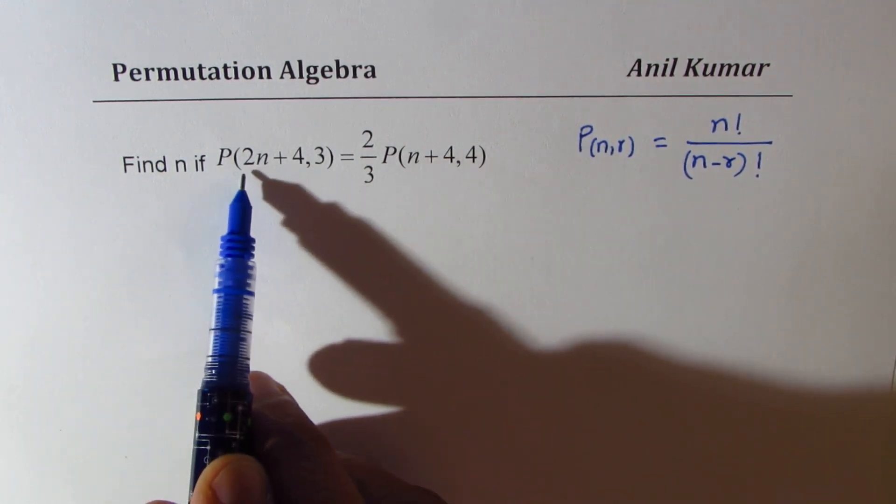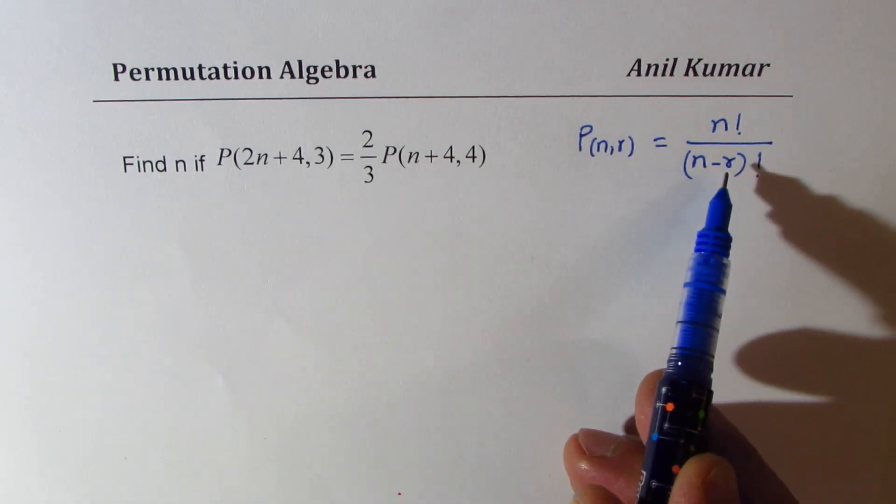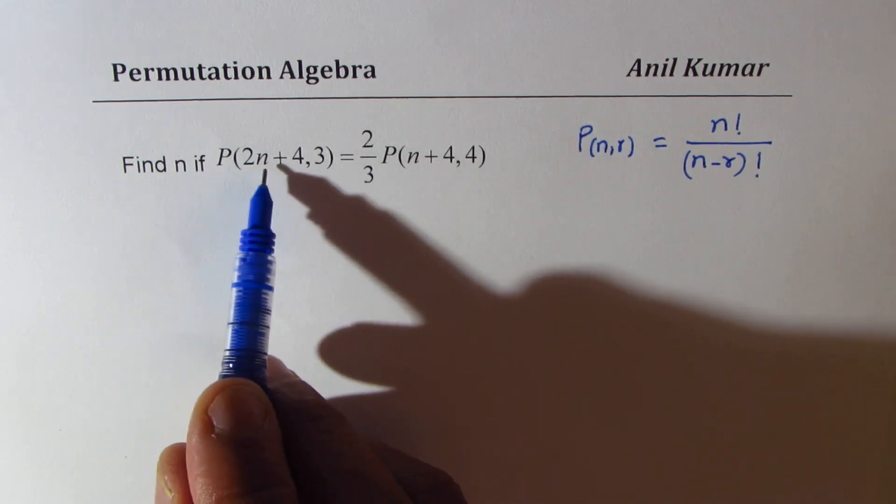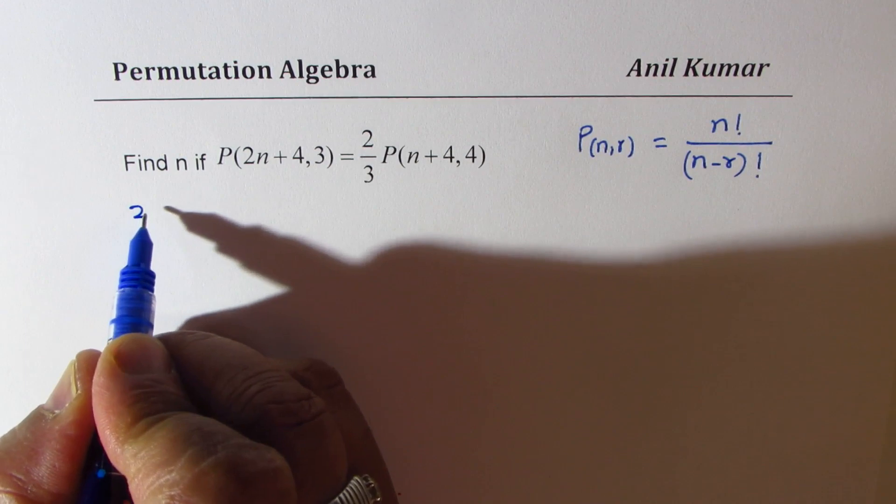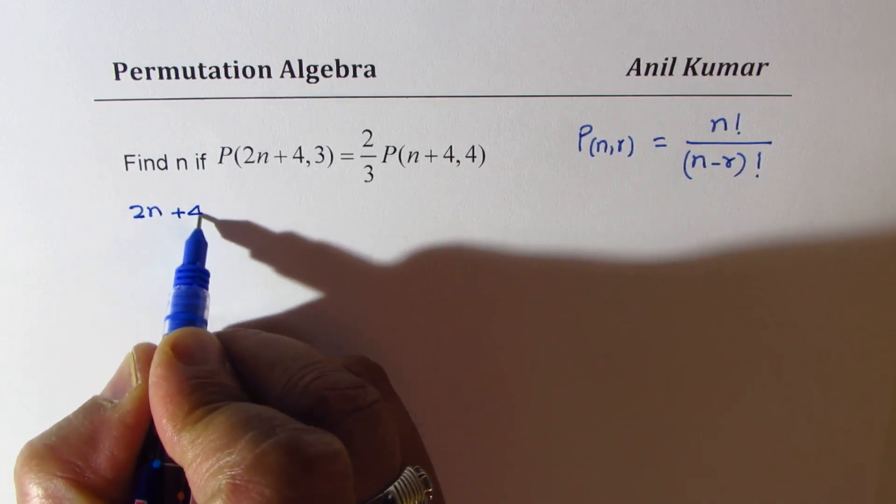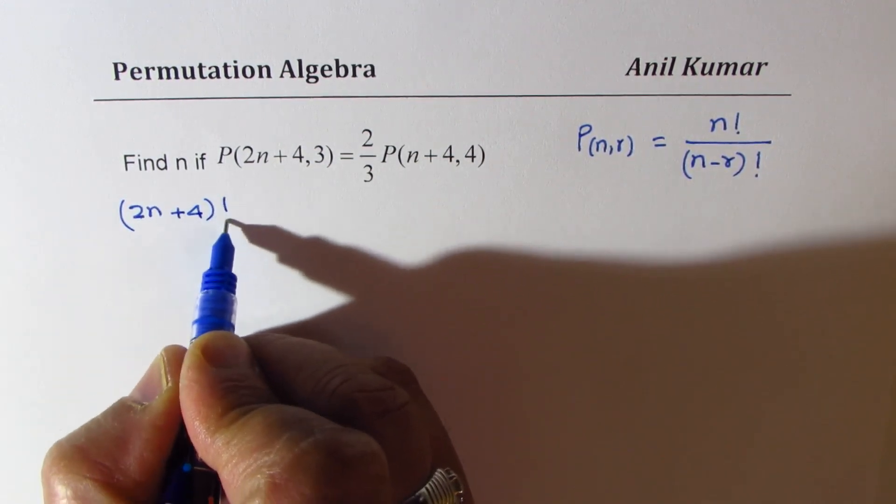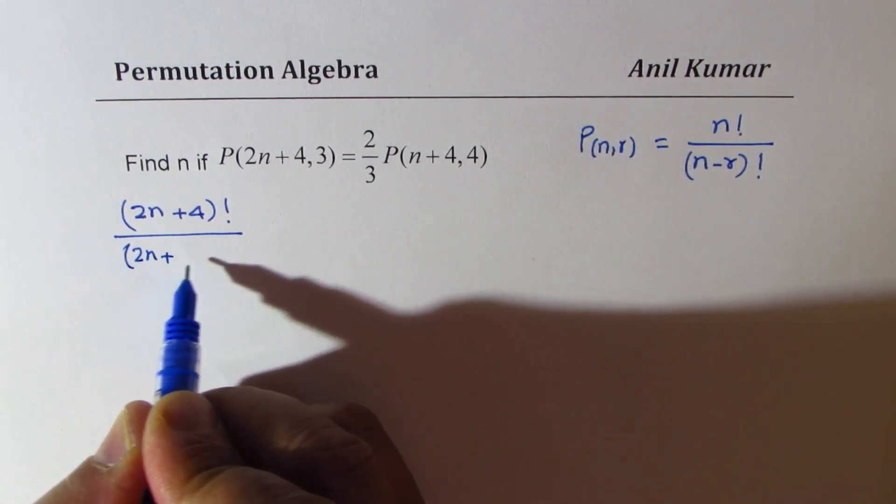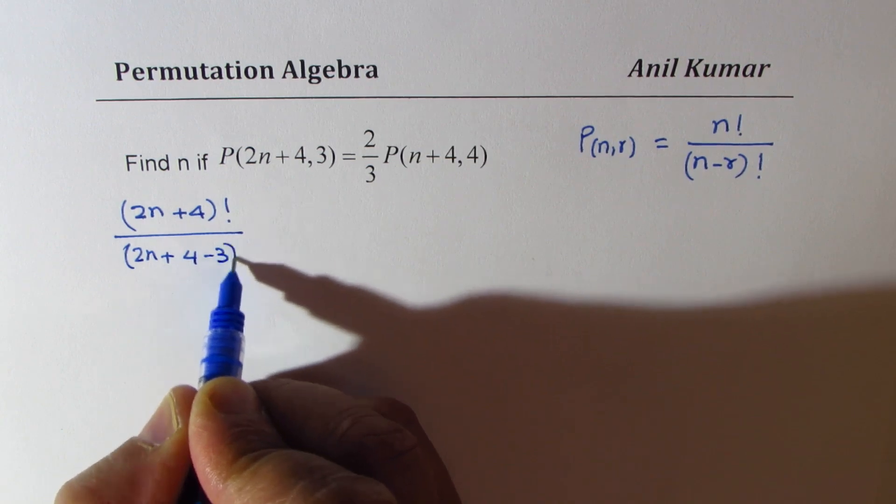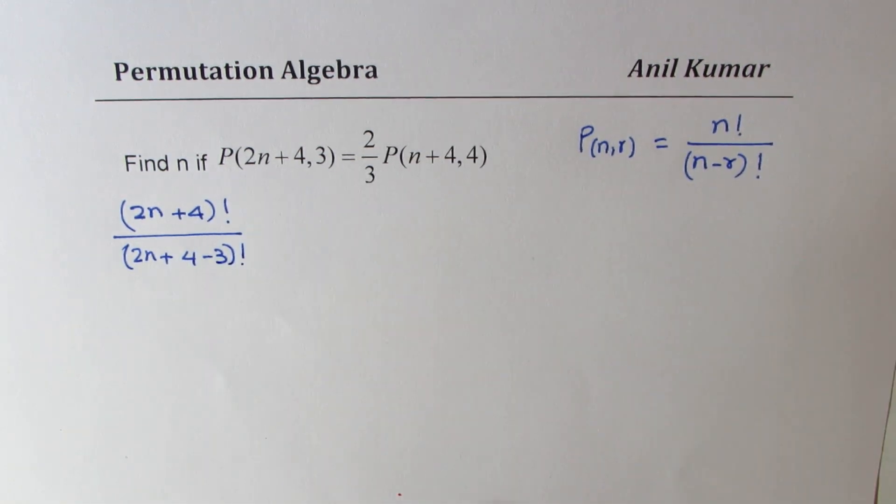Let's rewrite using the formula. P(2n+4, 3) could be written as (2n+4) factorial divided by (2n+4-3) factorial. So that is the left side.